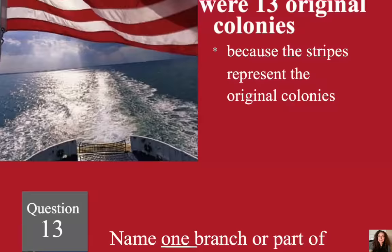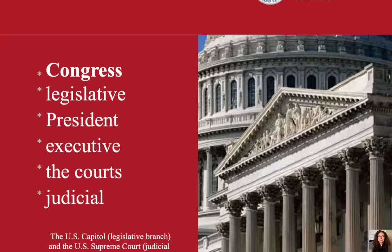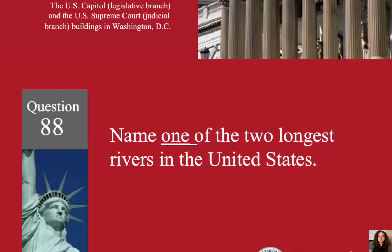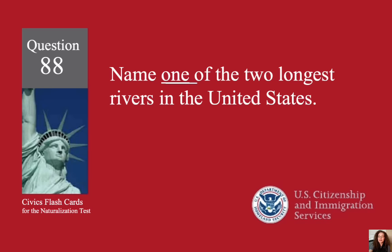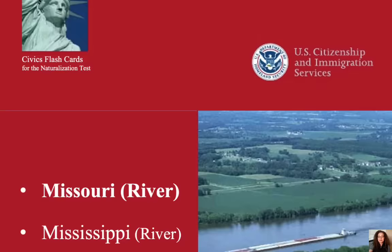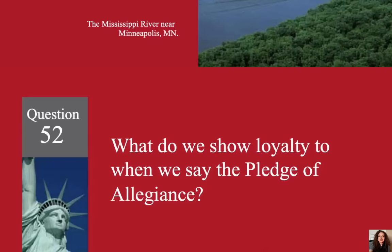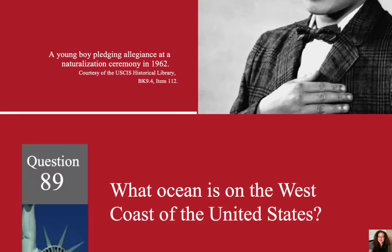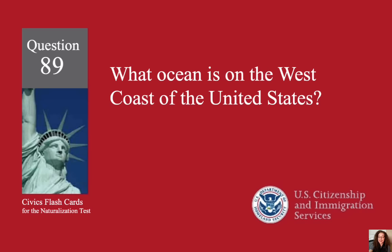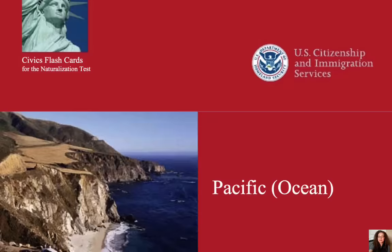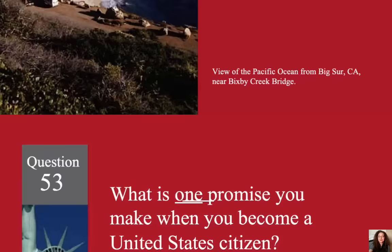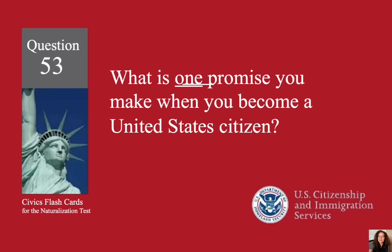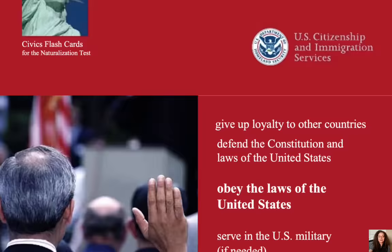Name one branch or part of the government. Congress. Name one of the two longest rivers in the United States. Missouri. What do we show loyalty to when we say the Pledge of Allegiance? The United States. What ocean is on the west coast of the United States? The Pacific Ocean. What is one promise you make when you become a United States citizen? Obey the laws of the United States.